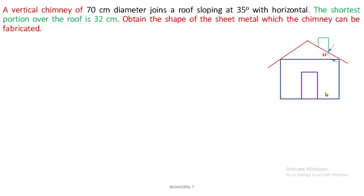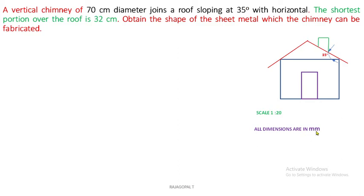The scale value is 1 is to 20, which means I'm going to convert 70 centimeter into mm — so it is 700 mm. 700 divided by 20 is 35, so 35 mm. All dimensions used in this answer are in terms of mm with scale 1 is to 20. This has to be followed for all dimension values in the question: 70 centimeter as well as 32 centimeter.